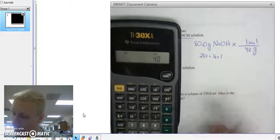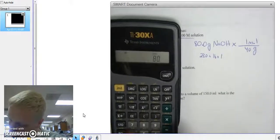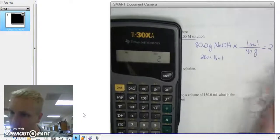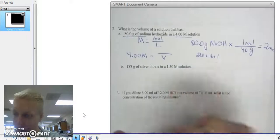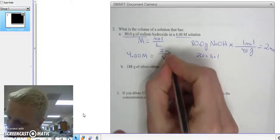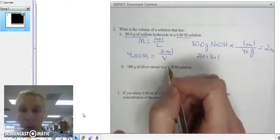So 80 times 1 divided by 40 should be about 2. There you go. And that's 2 moles. So now I plug that in to my molarity equation. 2 moles over an unknown volume equals 4 molar.